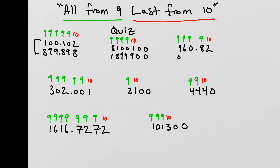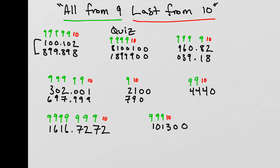Next: 9 minus 9 is 0, 9 minus 6 is 3, 9 minus 0 is 9, 9 minus 8 is 1, and 10 minus 2 is 8. Don't forget to bring that decimal down. Next: 9 minus 3 is 6, 9 minus 0 is 9, 9 minus 2 is 7, 9 minus 0 is 9, 9 minus 0 is 9, and 10 minus 1 is 9. Don't forget to add that decimal. Then we have 9 minus 2 is 7, and 10 minus 1 is 9. Bring those two zeros down. Next: 9 minus 4 gives us 5, 9 minus 4 is 5, and 10 minus 4 is 6. Bring that zero down.